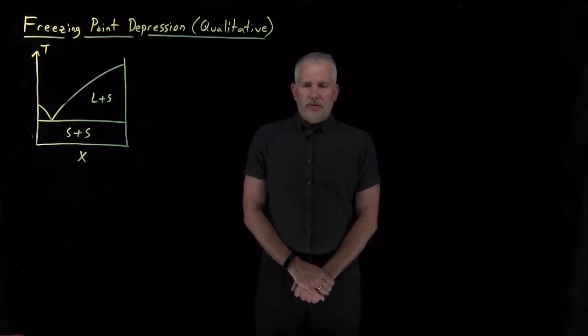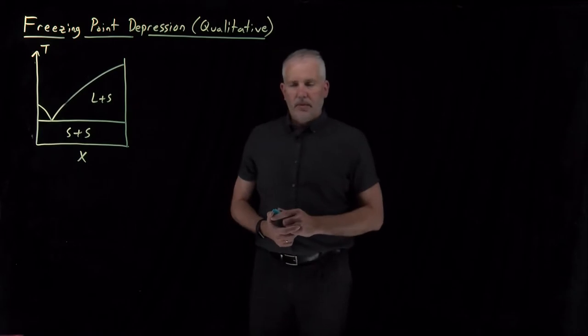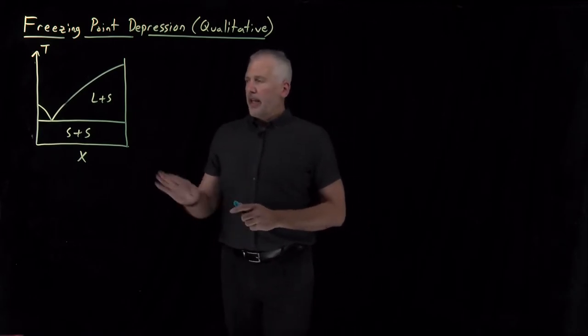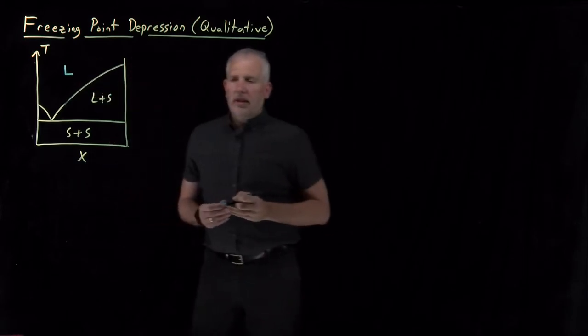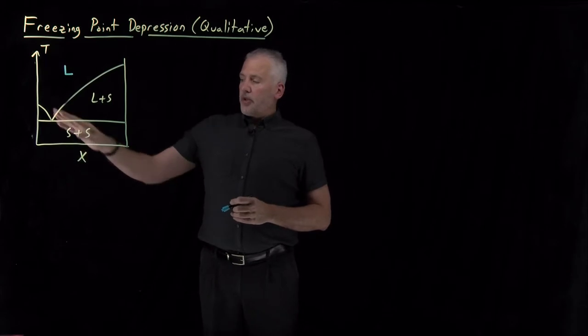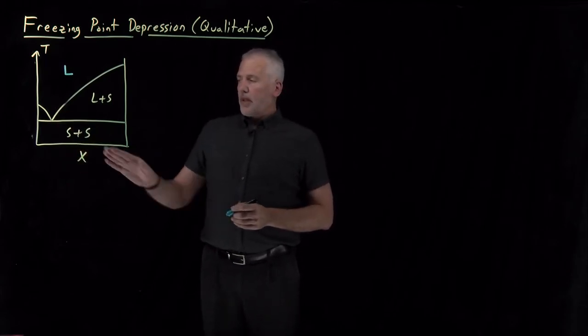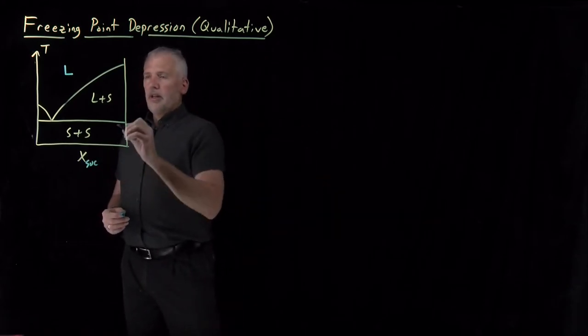As one example of colligative properties, we can look at how the freezing point of a mixture or solution changes with concentration. As a reminder, this is what the temperature composition phase diagram looks like for, in this case, it's relatively proportional for sucrose in water.